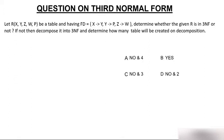The question is: let R having the following attributes and functional dependencies — determine whether the given R is in 3NF or not. If not, then decompose it into 3NF and determine how many tables will be created on decomposition.